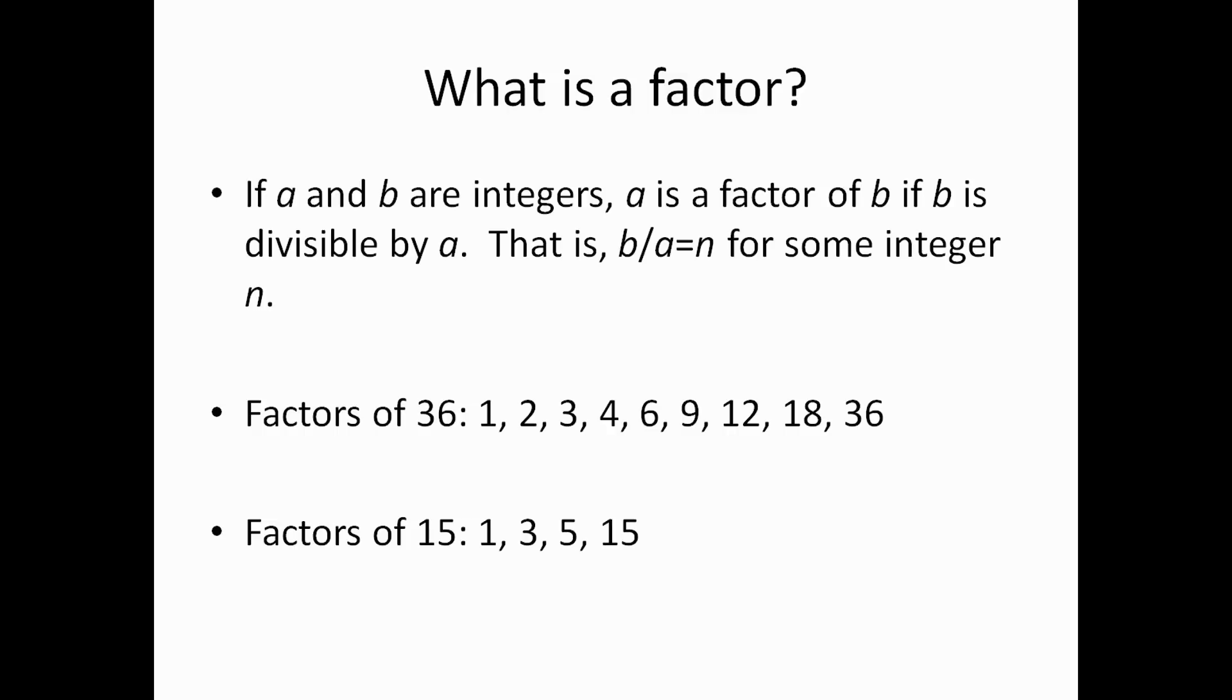One more thing to note. If you look at the factors of 36, as I was talking about earlier, the factors tend to come in pairs. Because if you divide 36 by 1, the answer, 36, is another factor of 36. If you divide 36 by 2, you get 18. 18 is another factor of 36. So, they come in pairs like that.